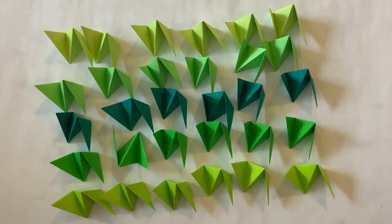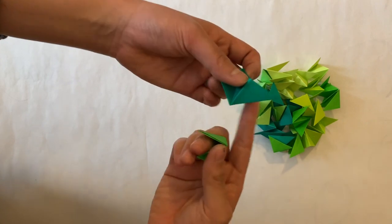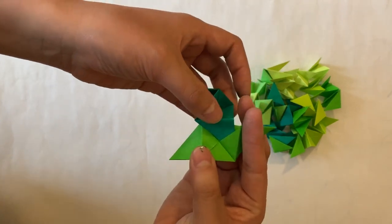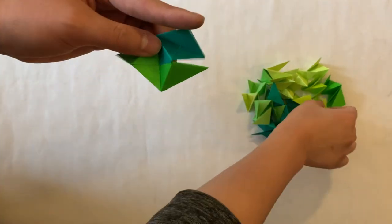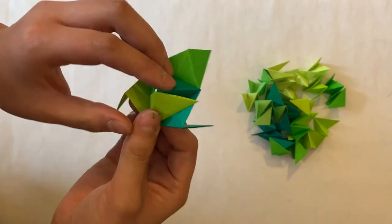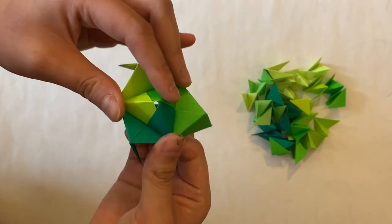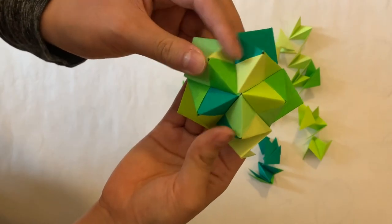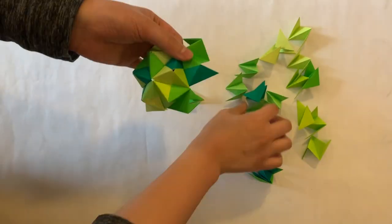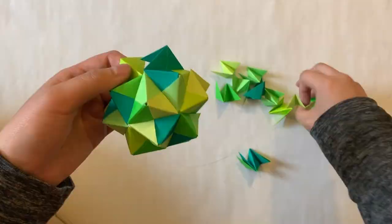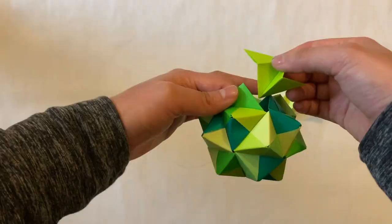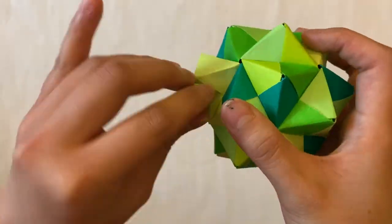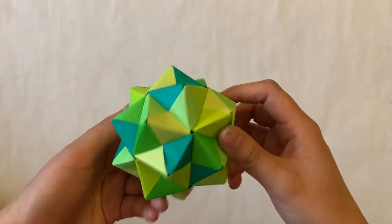These are called snowbee units, by the way. And to assemble, all you need to do is tuck this flap into this pocket. A corner has three units, and a face has five. Following this 3-5 rule all throughout the structure, you'll end up with this deadly thing.